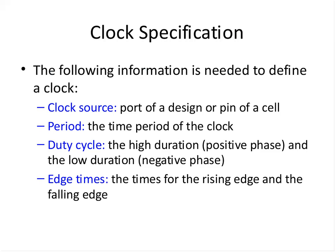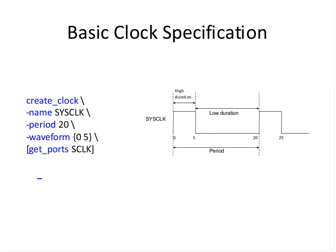Let us look at the clock specification — we need to tell prime time what is the duty cycle. We may choose to tell the duty cycle or use options called edges and waveforms. There are multiple ways to define the clock. This is a basic clock specification: consider something called sys_clock which rises at 0, falls at 5, and the period is 20. We map this to the command: create_clock -name sys_clock -period 20 -waveform {0 5} [port]. The first digit in waveform means the time at which the clock rises, the second is the time at which it falls.